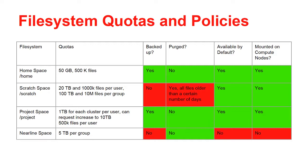The quotas on these file systems are the following. On your home space, you can have 50 gigabytes of data and 500,000 files. This space is regularly backed up, it is never purged, it is available to all users by default, and it is mounted on compute nodes. The scratch space allows a user up to 20 terabytes of data and 1 million files, and the group can have 100 terabytes of data and 10 million files.